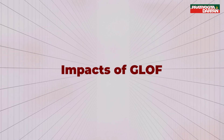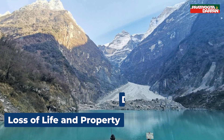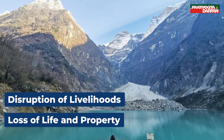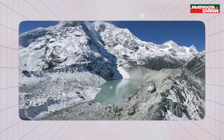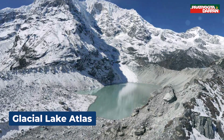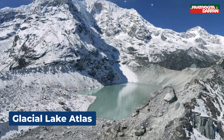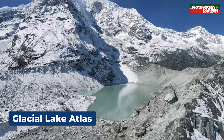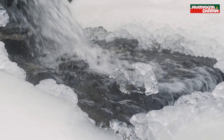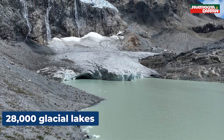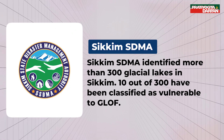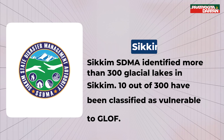Impacts of GLOF include loss of life and property, disruption of livelihoods, and infrastructural and environmental destruction. India's National Remote Sensing Centre released a Glacial Lake Atlas for the Himalayan river basins, identifying over 28,000 glacial lakes larger than 0.25 hectares. Sikkim's SDMA identified more than 300 glacial lakes in Sikkim, of which 10 have been classified as vulnerable to GLOF.